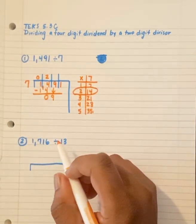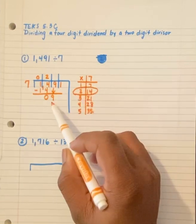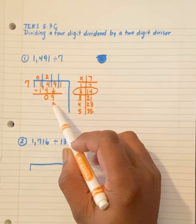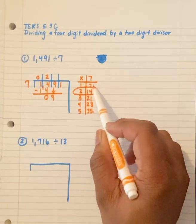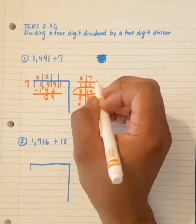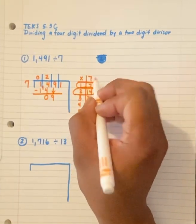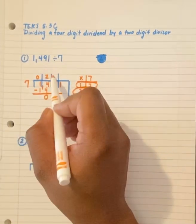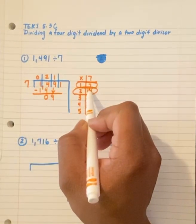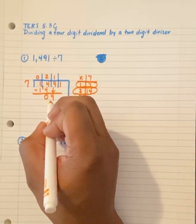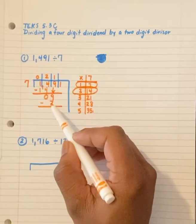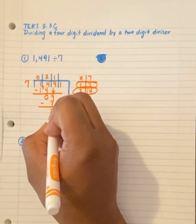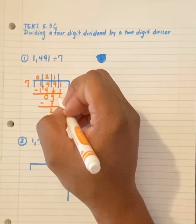And I do this process all over again. What can I multiply 7 by to get close to 9 without going over? Are there any answer choices here that are close to 9 without going over? Yes. I circle this again. 1 goes above the 9. The 7 goes below the 9 here. And I subtract again. 9 minus 7 equals 2. Then I bring down my 1.